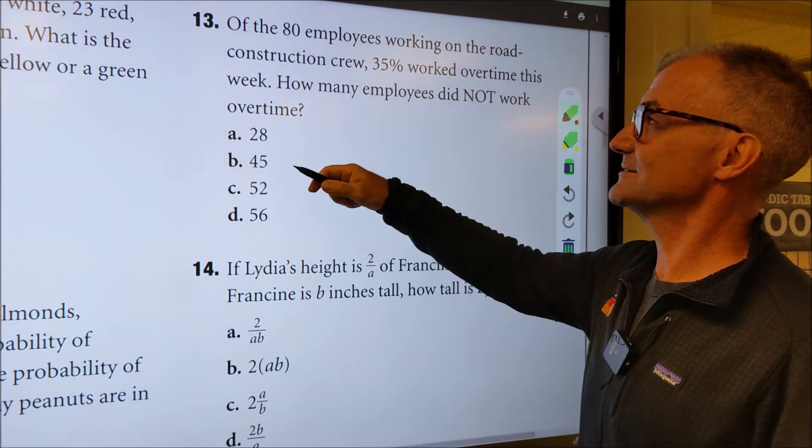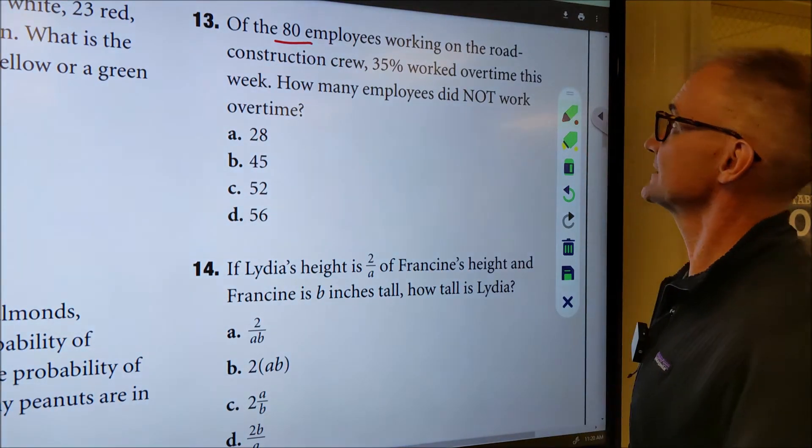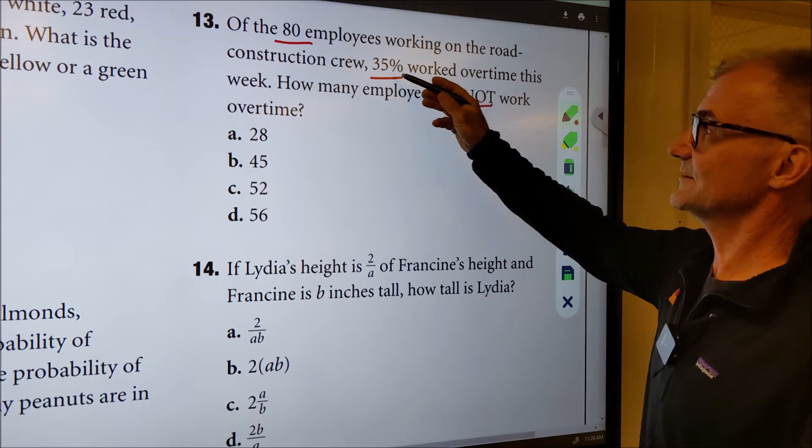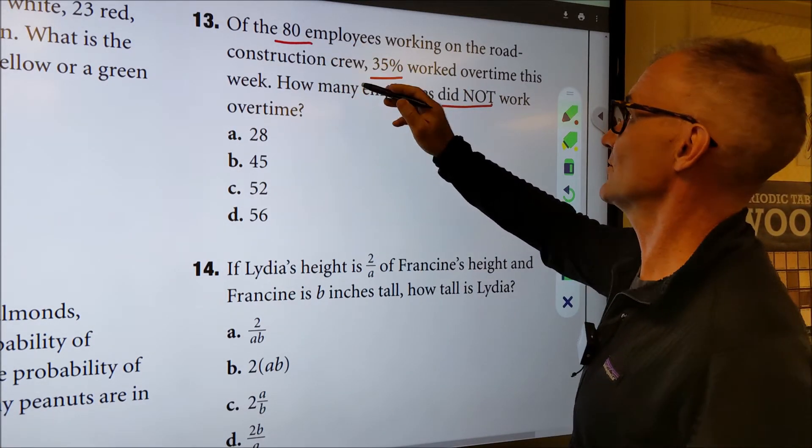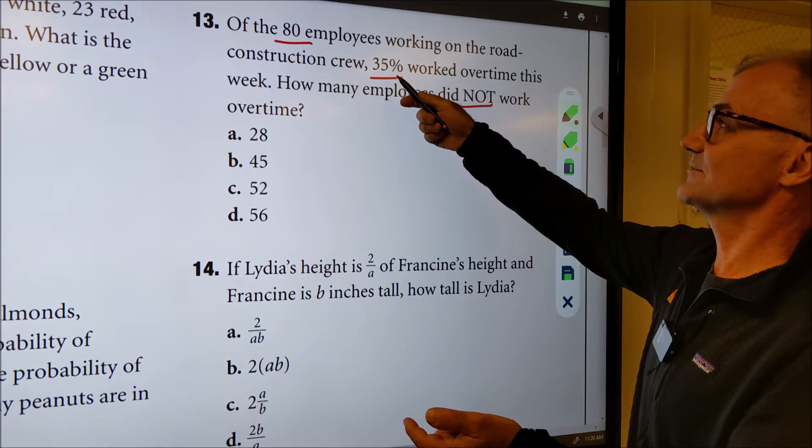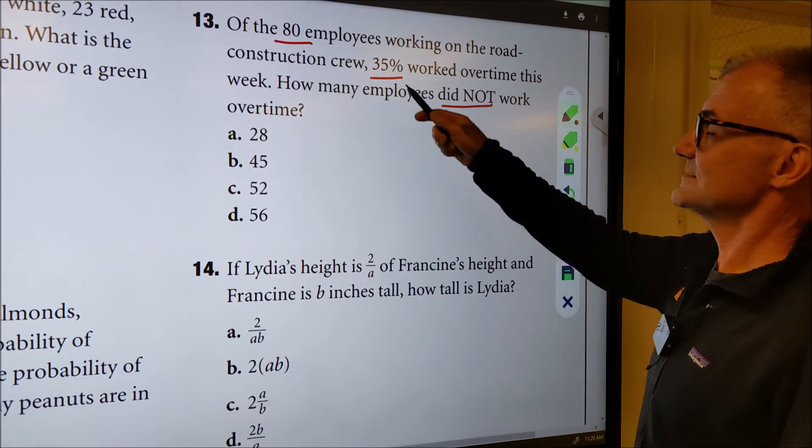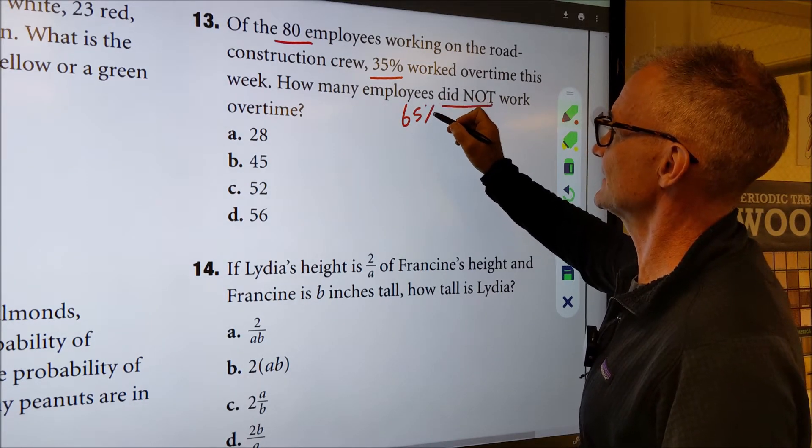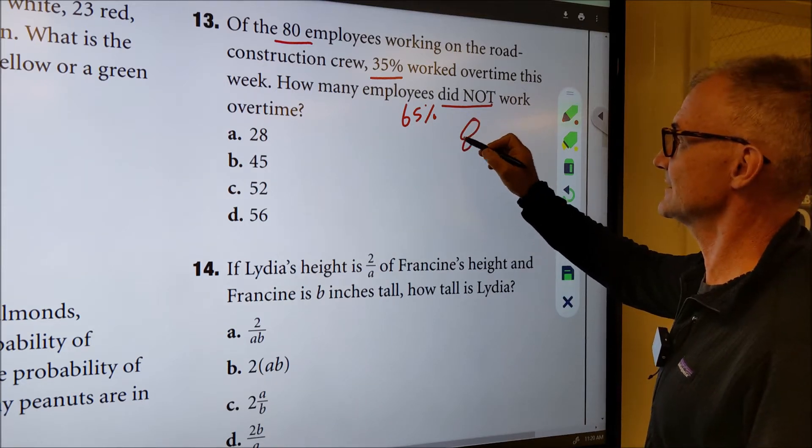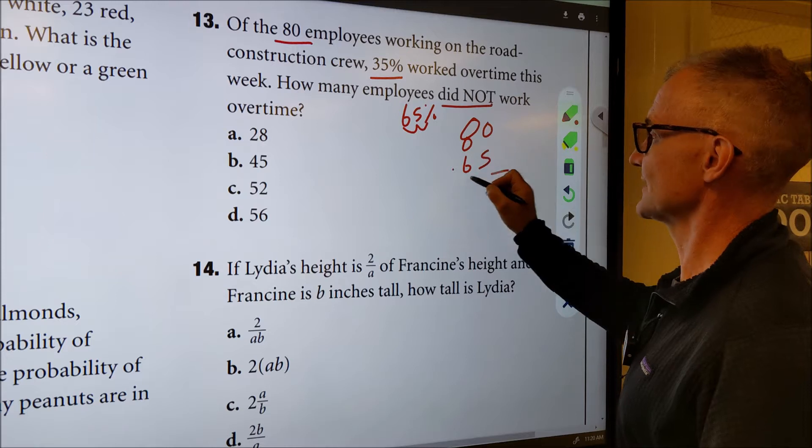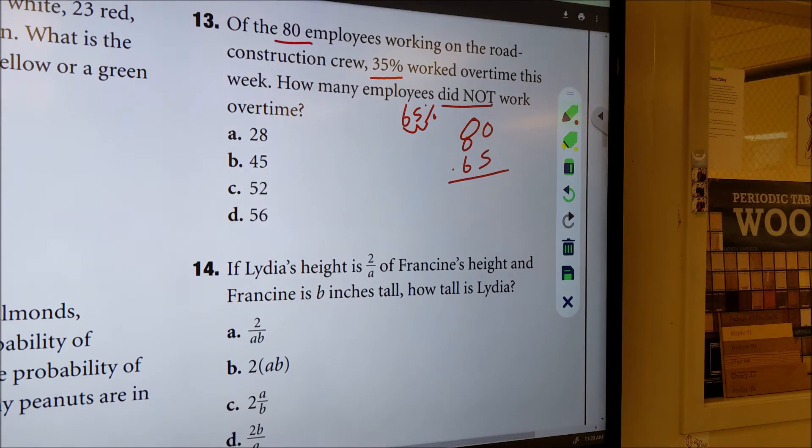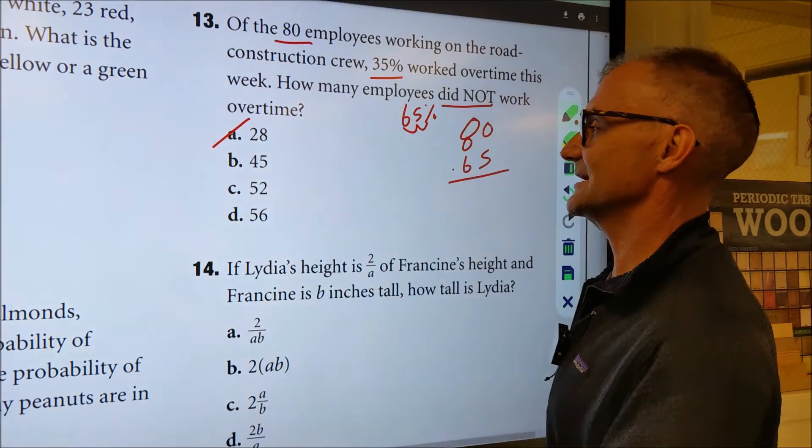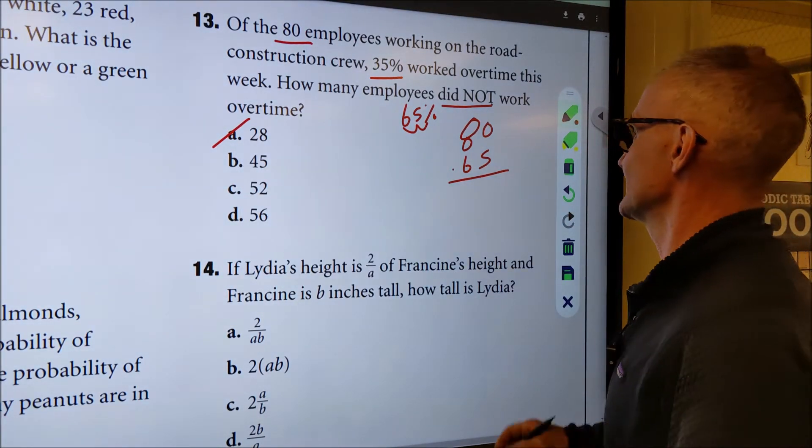Problem number 13 here. This is from chapter four percentages. 80 of the employees on the crew, 35% worked over time this week. How many employees did not work over time. So I can figure out 35% of 80 and then subtract that from 80, or I could just figure out what percent did not work over time, multiply that by 80. That might be a better way to do it. So a hundred minus 35 is 65%. So 65% did not. So I want to find 65% of 80. So I'm going to start with 80 here, convert this into a decimal 0.65. Even before I do this, let me just take a look at some of these answers. If I could figure it out, half of 80 is 40. But it's a fair bit more than that. So this is really about the only one to cross out. If I had a guess, I'm going to guess between C and D. Let's go ahead and start multiplying this out.